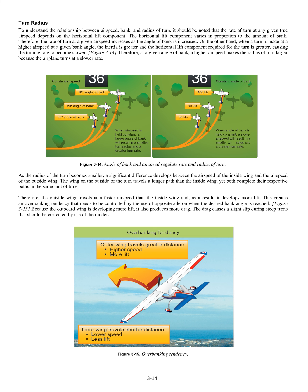As the radius of the turn becomes smaller, a significant difference develops between the airspeed of the inside wing and the airspeed of the outside wing. The wing on the outside of the turn travels a longer path than the inside wing, yet both complete their respective paths in the same unit of time. Therefore, the outside wing travels at a faster airspeed than the inside wing and, as a result, it develops more lift. This creates an overbanking tendency that needs to be controlled by the use of opposite aileron when the desired bank angle is reached.